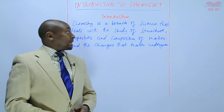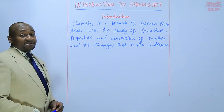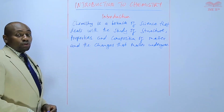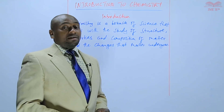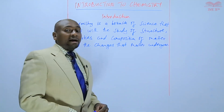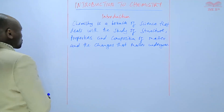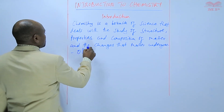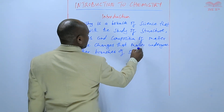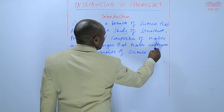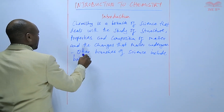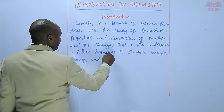Having talked about a branch of science, we have other branches of science — we have biology and we have physics. Those are other branches of science, and chemistry is one other branch of science.